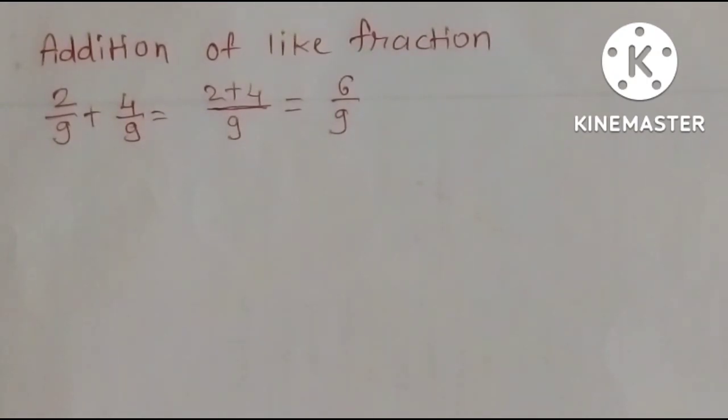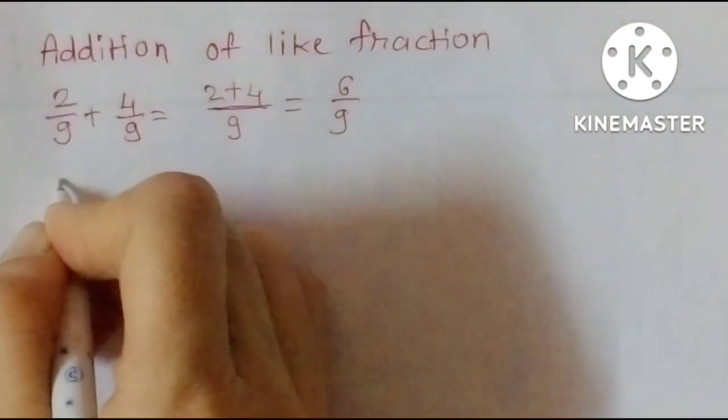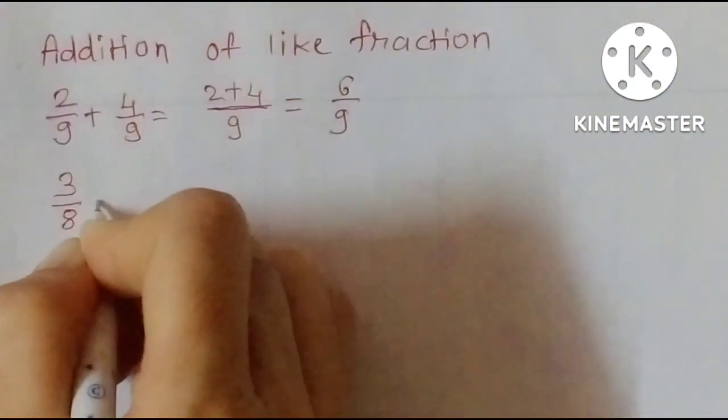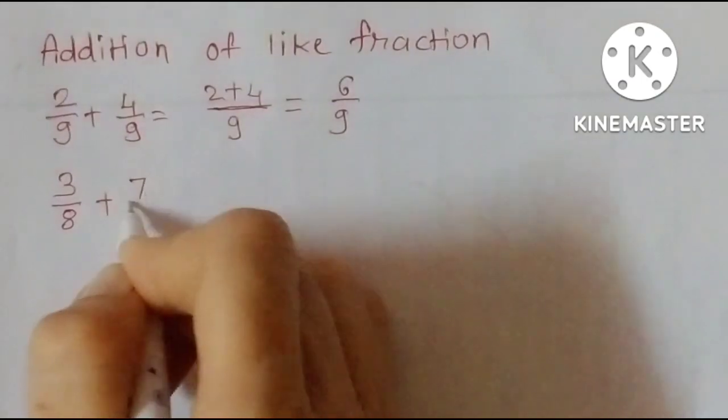To add like fractions, add numerators and copy the denominators. Next sum: 3 upon 8 plus 7 upon 8.